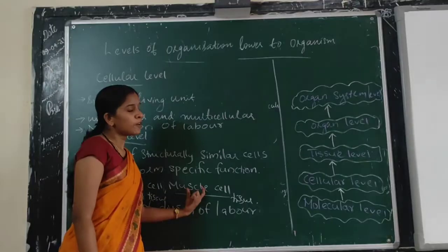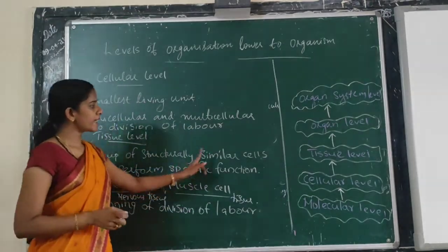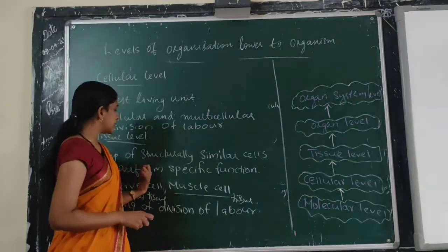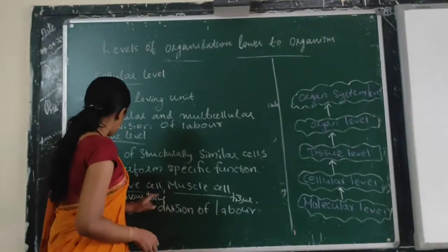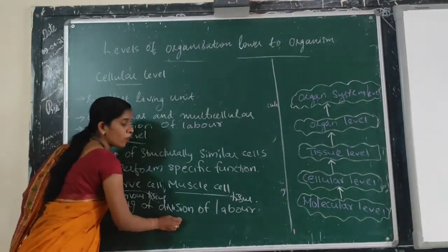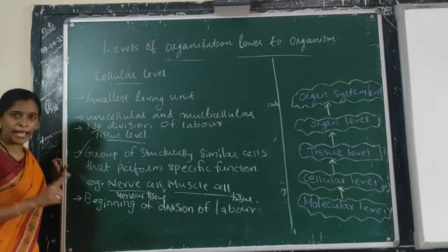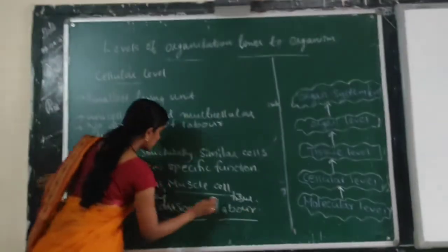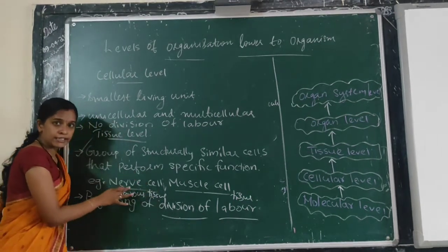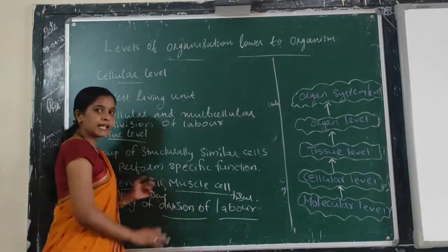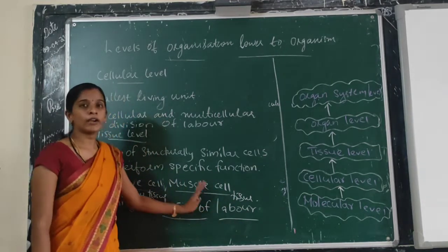The function of muscular tissue is to help in movement — that is, contraction and relaxation of muscles. So here begins the division of labor: nerve cells perform conducting, muscle cells perform contraction and relaxation. This is called division of labor.